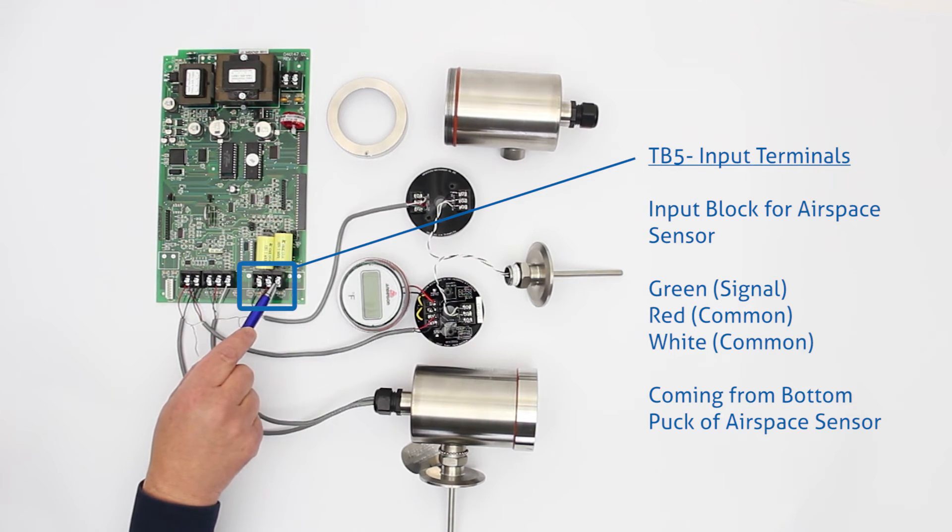Over to the right we have TB5, we have a green, a red and a white here, the same setup, the green is the signal, the red and whites are the common and these are coming from the bottom puck on the airspace sensor.